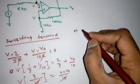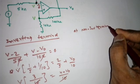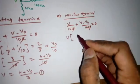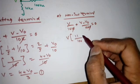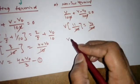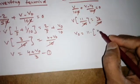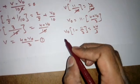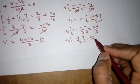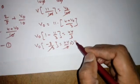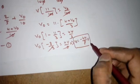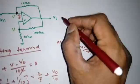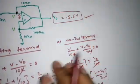Applying nodal analysis at the non-inverting terminal: V/(10 kΩ) + (V - V_naught)/(100 kΩ) = 0. Simplifying: 11V/100 = V_naught/100, so V_naught = 11V. Substituting V = (4 + V_naught)/3: V_naught = 11 × (4 + V_naught)/3, giving V_naught × (1 - 11/3) = 44/3, so (-8/3) × V_naught = 44/3. Therefore V_naught = -44/8 = -5.5 V.